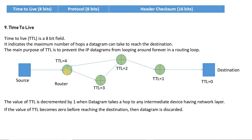The TTL number will be decremented at each router — for example, the packet comes in with TTL 4, and it decrements at each hop. At the next router it decrements again, and finally, the number decrements further until the destination is reached or until the number becomes zero.